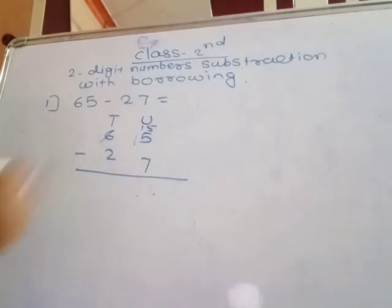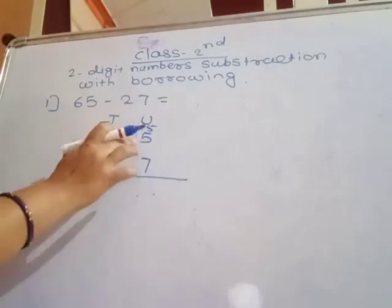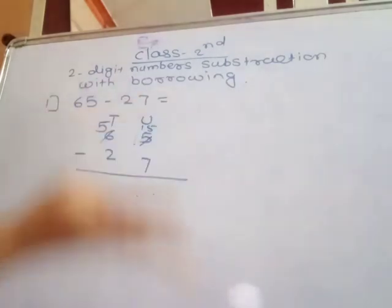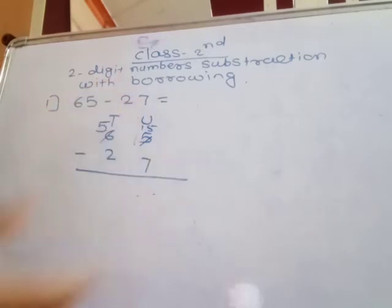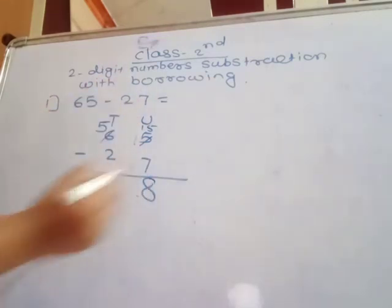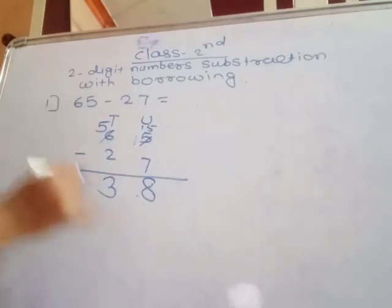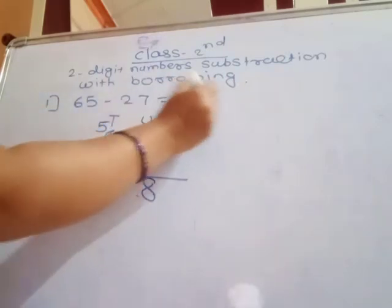Now you have 15, and the tens digit becomes one less. Then 15 minus 7: count up from 7 — 8, 9, 10, 11, 12, 13, 14, 15 — that's 8 fingers, so write 8. Then tens place: 5 minus 2 equals 3. The answer is 38. So 65 minus 27 equals 38.